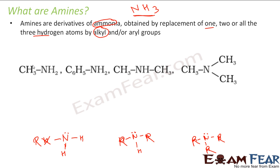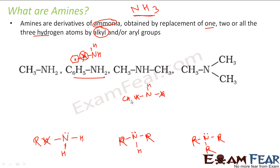In NH3, one hydrogen is replaced with a methyl group — this is one amine. In another case, one hydrogen is replaced with a benzyl group, so this is also an amine — this becomes C6H5-NH2. Similarly, two of the hydrogens are replaced with two methyl groups — this is also an amine. And when all three hydrogens are replaced with CH3, this is also an amine.